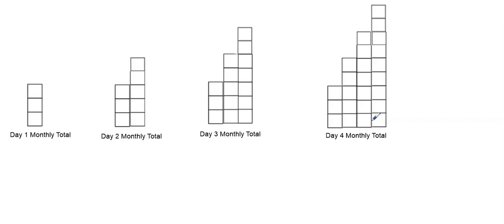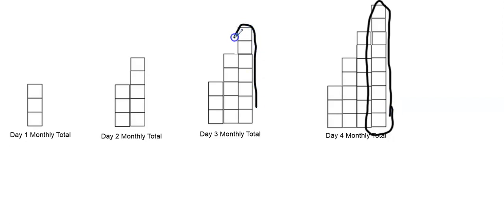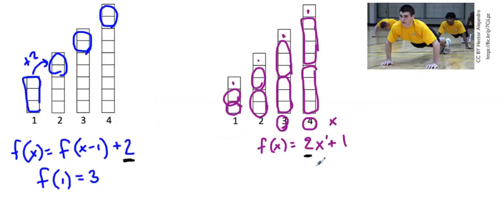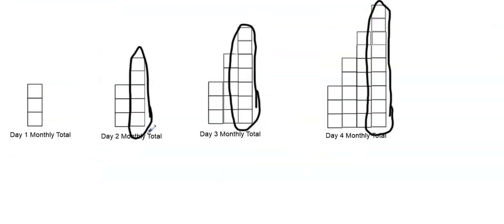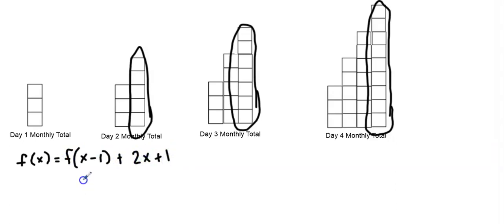For the recursive equation, a lot of the work is already done, because what's being added as you go from one day's monthly total to the next is just the last column — and we just created a linear equation for that: 2x + 1, representing how much is added on that day. So the recursive equation is f(x) = f(x−1) + (2x + 1), starting on day one with a total of three push-ups.